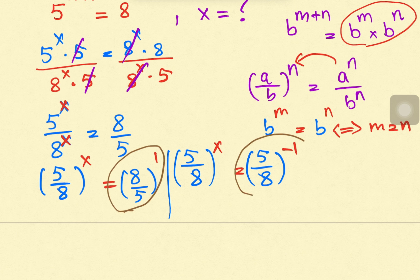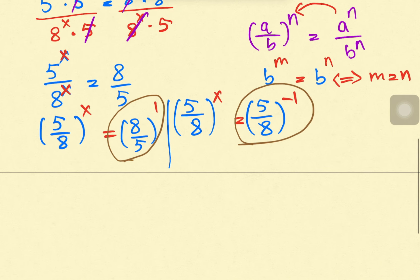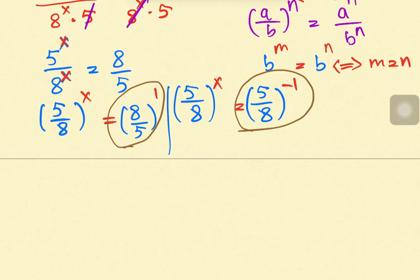This is the negative exponent rule. The negative exponent rule is a over b to the whole power n equals b over a to the whole power negative n.